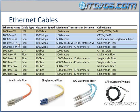Then we've got 1000BaseLX, which is also fiber, 1000Mbps. It can go 550 meters for multi-mode fiber, or 2000 meters if we're using single-mode fiber — so normally we're going to be using single-mode fiber here. We can think of the S as being short and L as being long, which is an easy way to remember the distances for fiber.